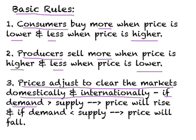If demand is greater than supply — a shortage — the market price will rise and continue to rise until we hit equilibrium where demand equals supply. As price rises, people cut back on demand, and supply goes on increasing. Initially we had demand greater than supply; now demand falls and supply increases until we reach the equilibrium point where demand equals supply.